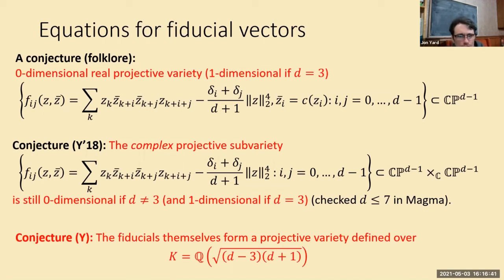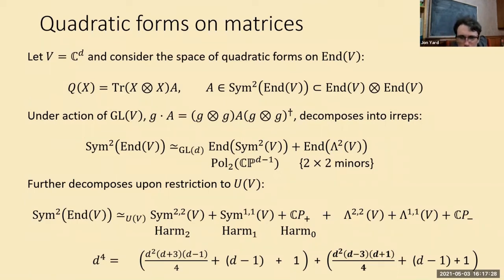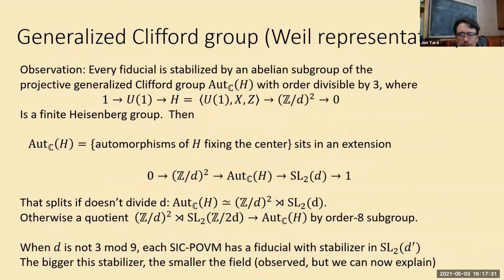There's beautiful group symmetry of the Heisenberg group described by something called the Weil representation. You take the group of all automorphisms of the Heisenberg group that fix the center — these are representable by conjugation by matrices, giving a natural projective representation. This is studied extensively in number theory and quantum information, where people call it the generalized Clifford group. The upshot is that this group lives inside an extension of groups that's either a semidirect product or closely related to one.